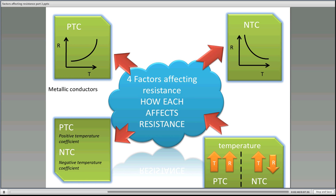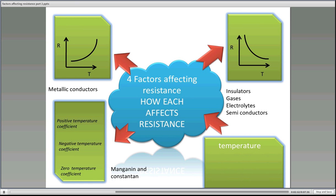Now metallic conductors have a PTC characteristic like copper and aluminium, whereas insulators, gases, electrolytes and semiconductors have an NTC characteristic. Now things like manganin and constantan have a zero temperature coefficient of resistance.